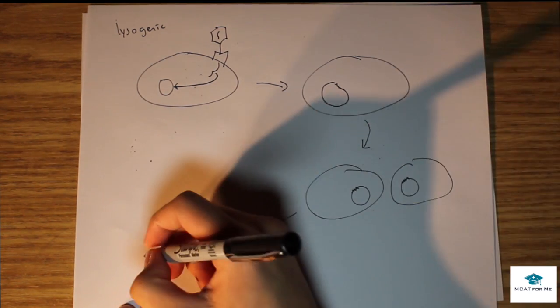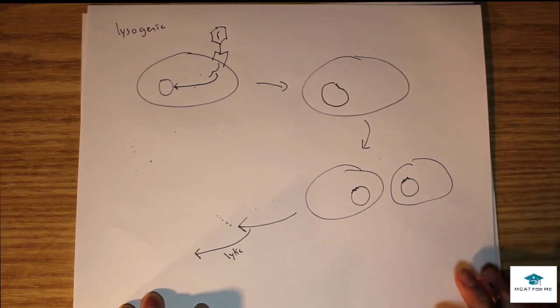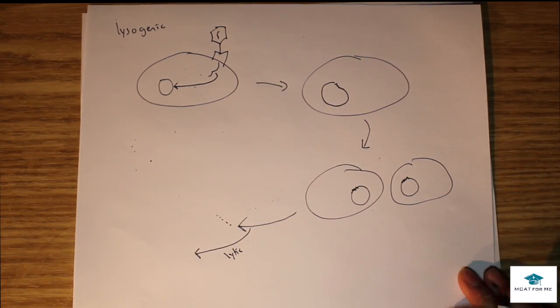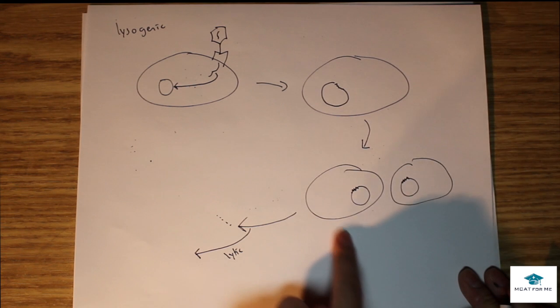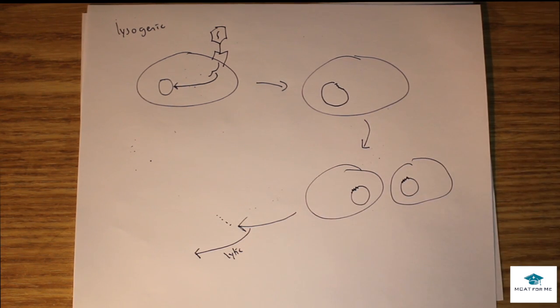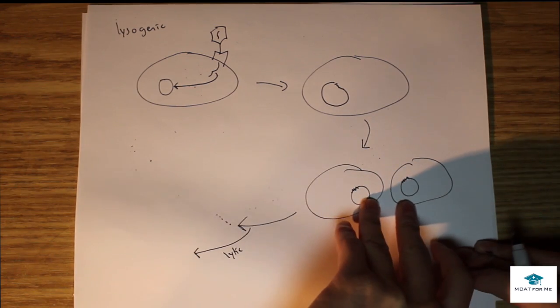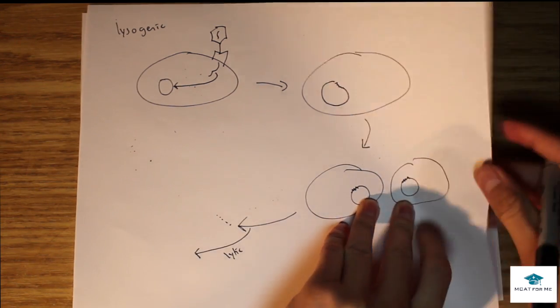It can break out, do the lytic cycle and now it's going to undergo the lytic cycle and have that lysis that we saw before. But pretty much lysogenic is this latent lifestyle. It just gets built up within the genome and gets integrated within the genome and it's almost indistinguishable.